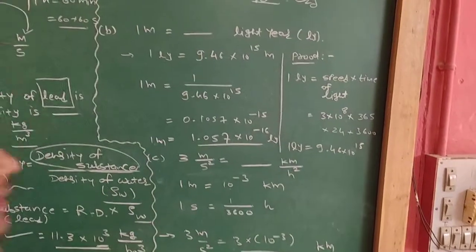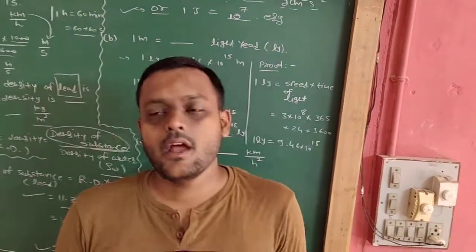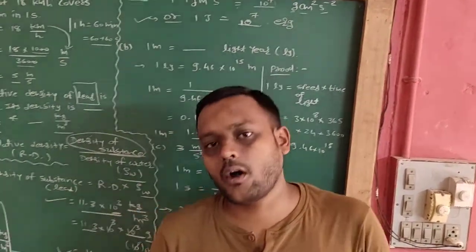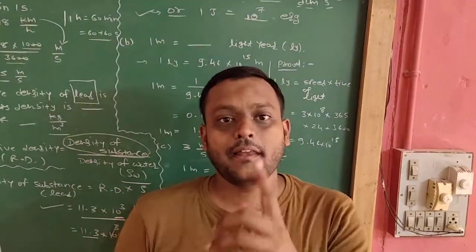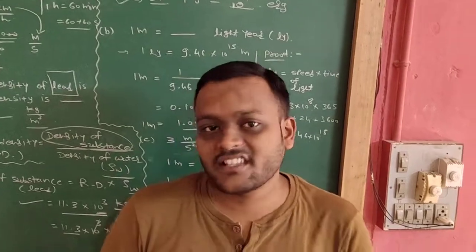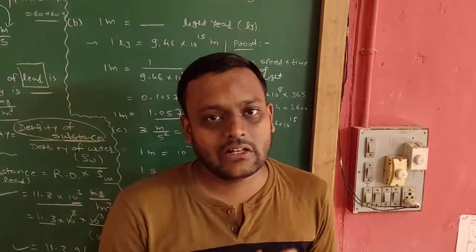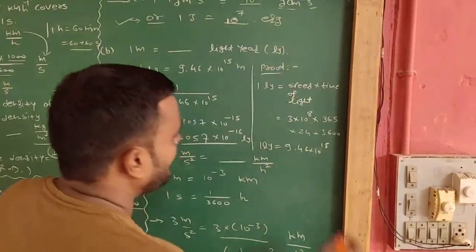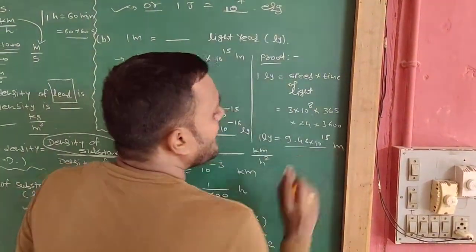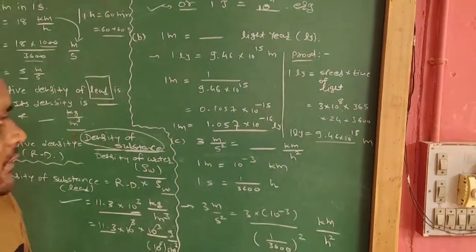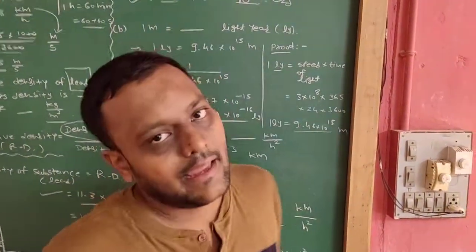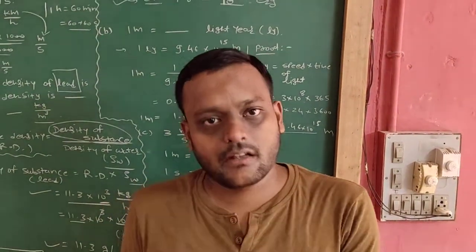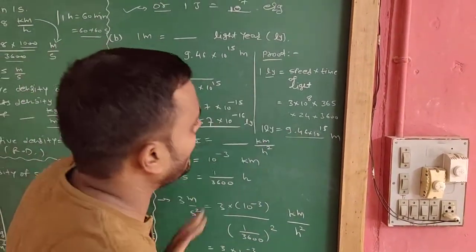Next question — this is also given in your theory and can be asked in MCQs: one light year is a unit of which physical quantity? Light year is a unit of distance. We write it in short as 'ly' — l stands for light, y stands for year.